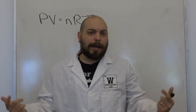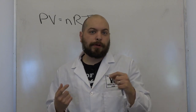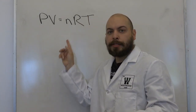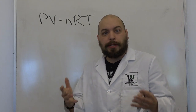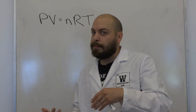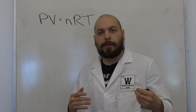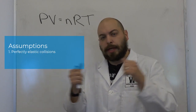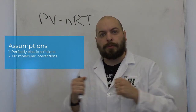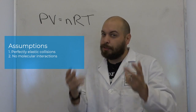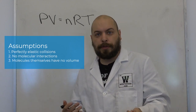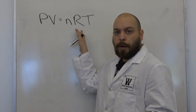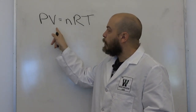Now that we've established the relationships between all our variables and the existence of the gas constant, we have developed what we know as the Ideal Gas Law. The Ideal Gas Law represents any gas behaving like an ideal gas, which follows those assumptions from the last video: no collisions are inelastic, molecules don't interact with each other, and gas molecules are assumed to take up no space themselves. If those assumptions are valid — which oftentimes they are — this equation is used: PV equals nRT, sometimes remembered as 'Pivner.'